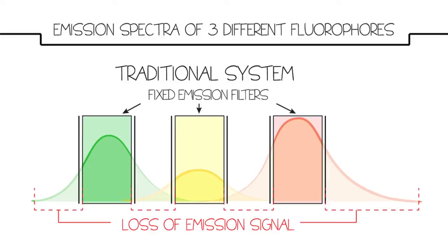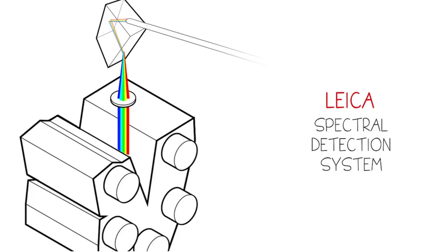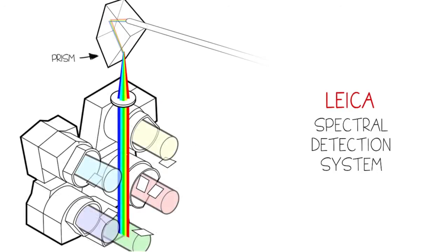Leica maximizes channel efficiency with a unique spectral detection system that accommodates the variability of multiple fluorophores. After a sample's emission has been dispersed by the prism, specific wavelengths of light can be separated out for detection.